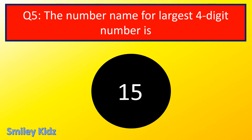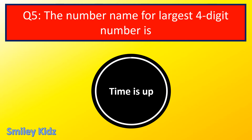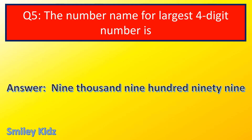Question number 5. The number name for the largest 4-digit number is? The right answer is 9,999. They are asking the number name for the largest 4-digit number. The largest 4-digit number is 9,999. Therefore, the number name for the largest 4-digit number is nine thousand nine hundred and ninety-nine.